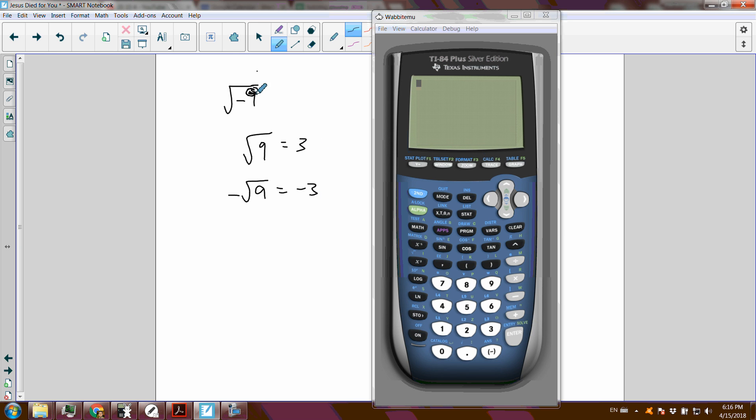Well, does every number have two square roots? Hmm, what is the square root of negative 9? Let's see. Well, first of all, the calculator will tell us that the square root of 9 is 3, as expected.